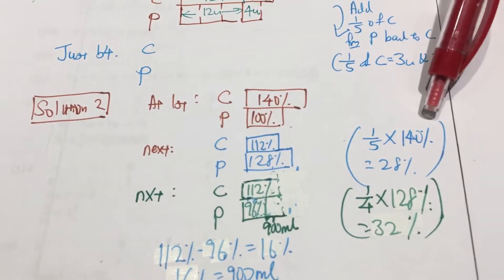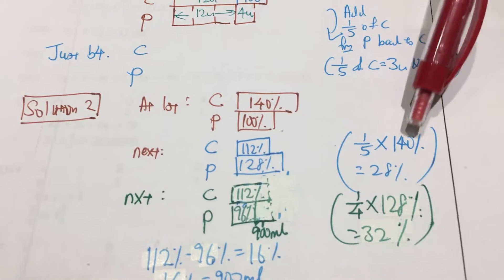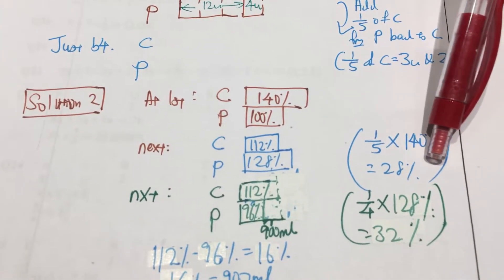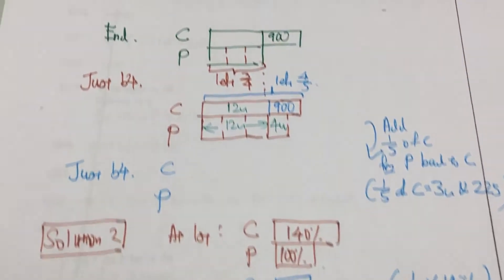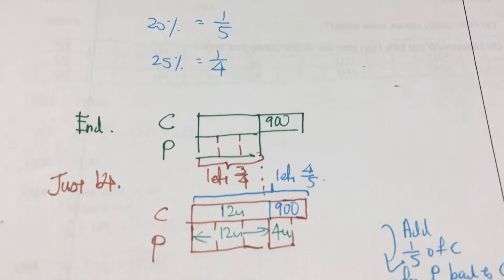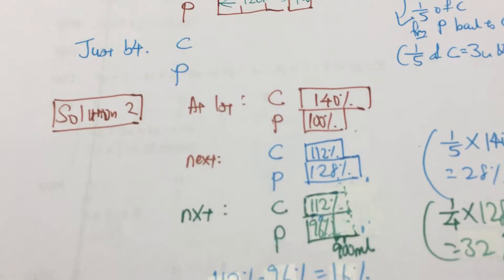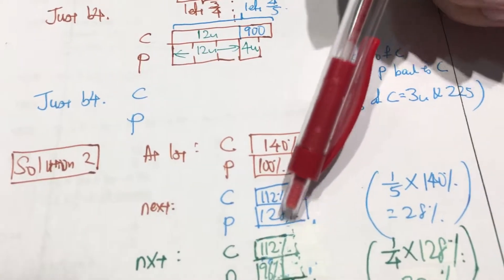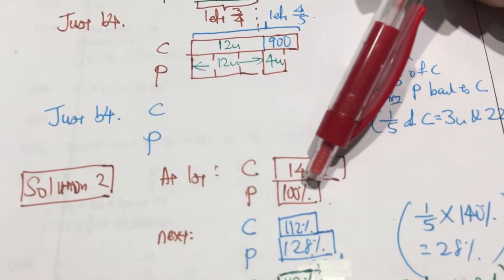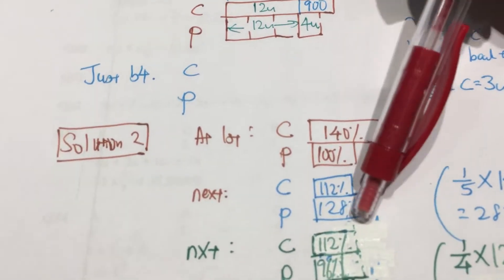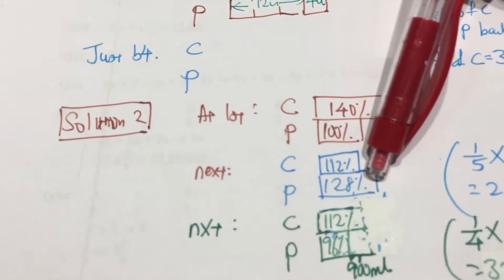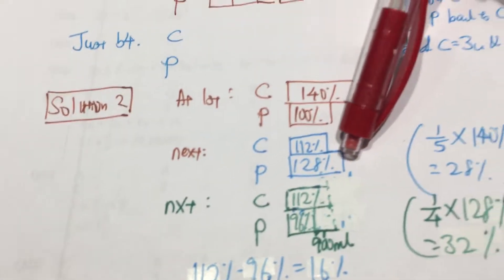80% of 140% will be a reduction of 28%. So this is what I draw and then, after that, you have to shift this 28% from C to P, which gives you 128% for P.